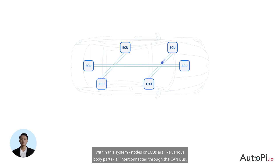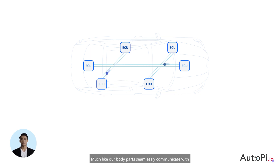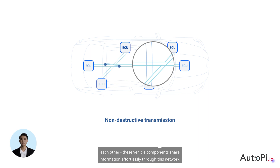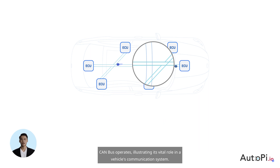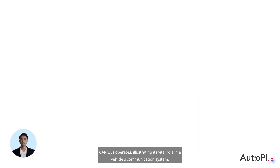Within this system, nodes or ECUs are like various body parts, all interconnected through the CAN bus. Much like our body parts seamlessly communicate with each other, these vehicle components share information effortlessly through this network. This analogy simplifies our understanding of how the CAN bus operates, illustrating its vital role in a vehicle's communication system.